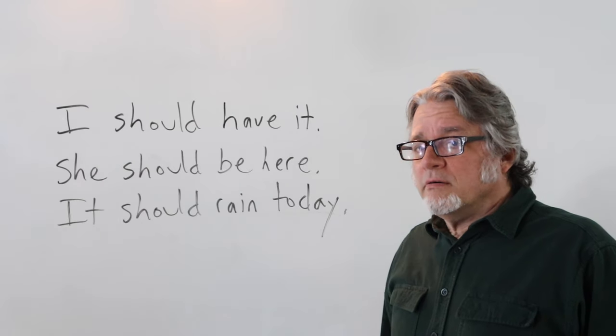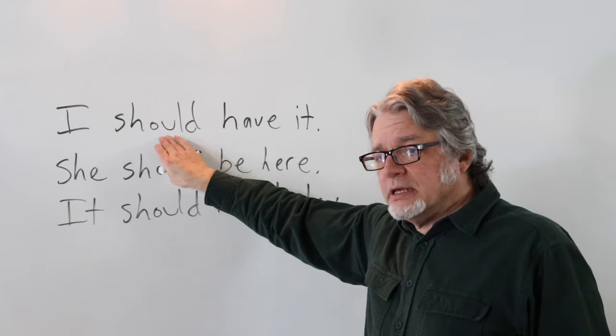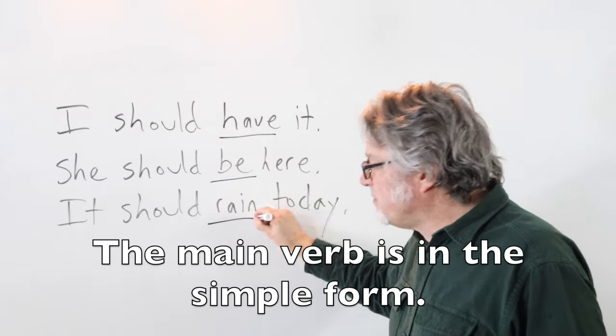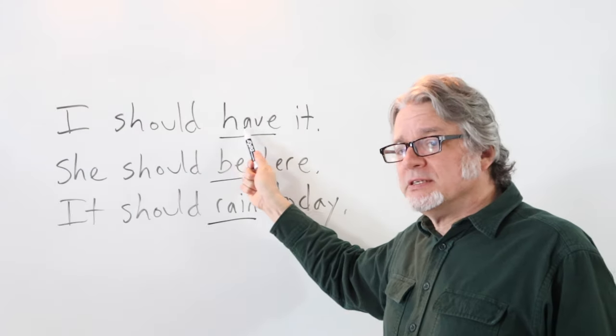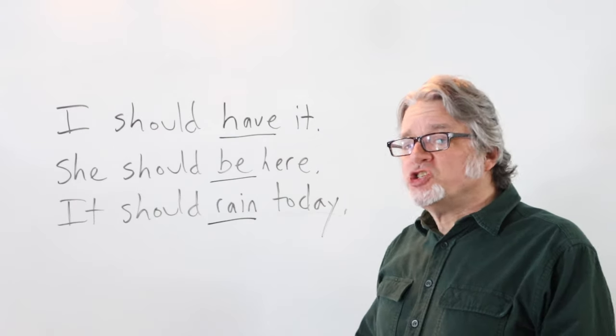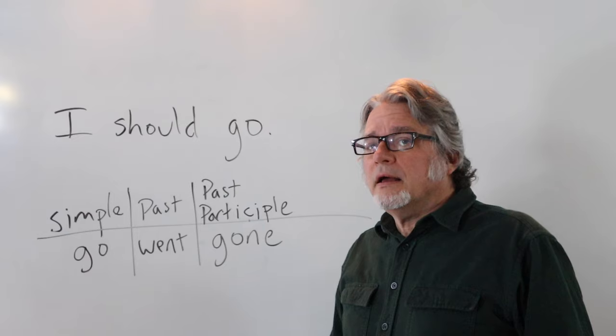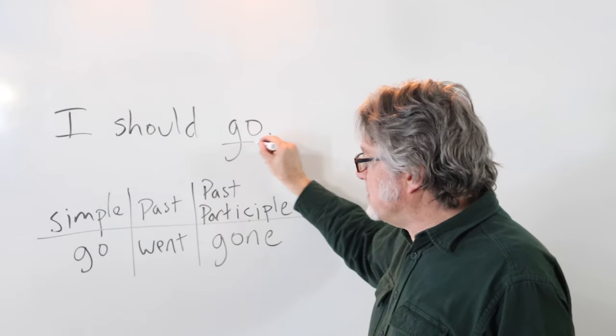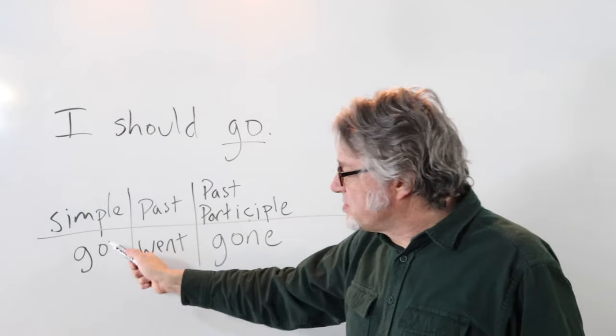Following the modal verb should, the main verb is in the simple form. I should have it. She should be here. It should rain today. After the modal verb should, the main verb is in the simple form.